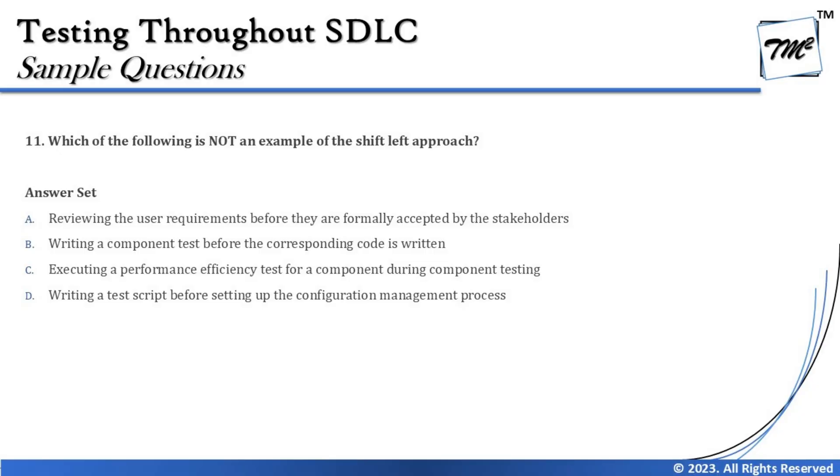Option C — executing a performance efficiency test during component testing — might seem like the right answer since we commonly think performance testing only happens after system testing. However, as discussed in earlier tutorials, a performance tester is free to participate early in the lifecycle right from the component level, reviewing code or performing basic checks for memory leaks and wild pointers to detect anomalies. So option C is actually also a shift-left example.